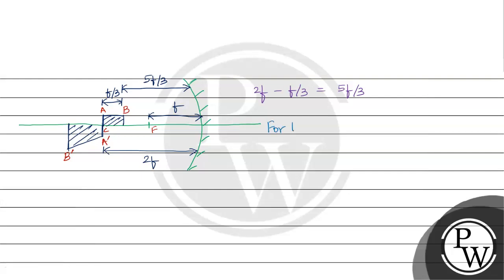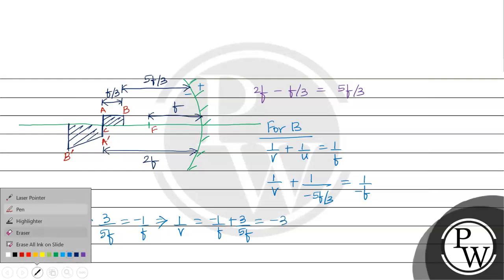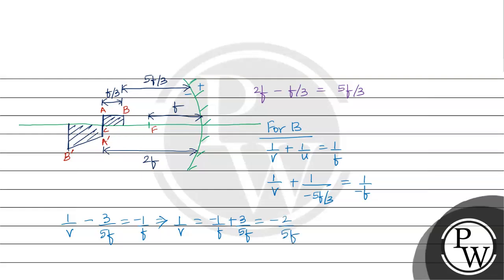Now let's look at B' location. For B, use the mirror formula: 1 by V plus 1 by U equal to 1 by F. 1 by V plus, look at the negative side—this side positive, this side negative. Concave mirror focal length is negative, so 1 by V minus 3 by 5F equals 1 by V. This gives V value as minus 5F by 2.